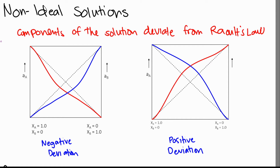These deviations from ideality are due to real interactions between components. In a binary solution A-B, the interaction between A and B will cause some deviation from ideality. We can consider two types of deviation: negative and positive deviation, and this deviation relates to Raoult's Law.